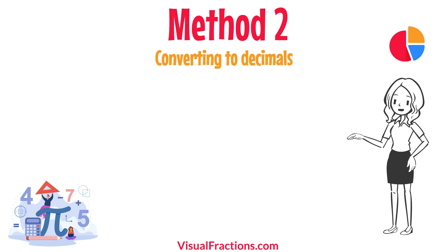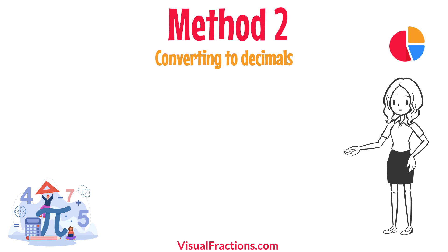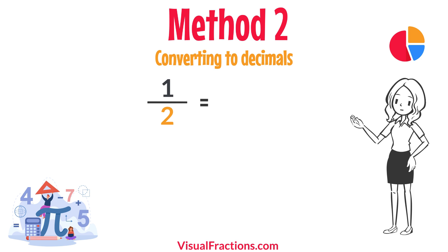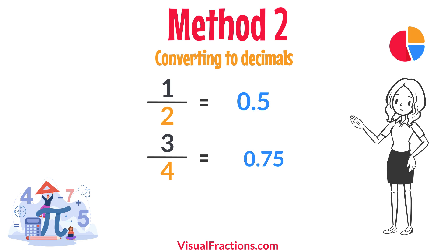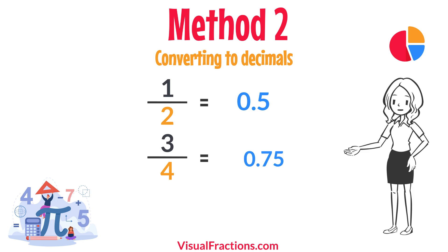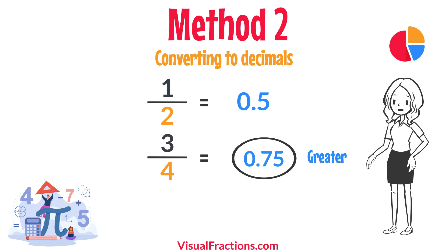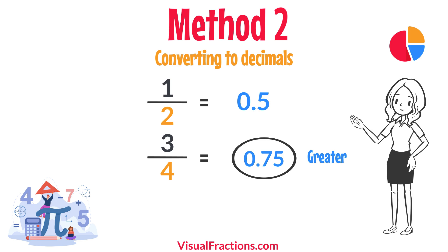For a second method, let's convert each fraction to a decimal. Using a calculator, divide one by two to get 0.5, and divide three by four to get 0.75. This calculation shows that 0.75 is greater than 0.5, confirming that three quarters is indeed greater than one half.